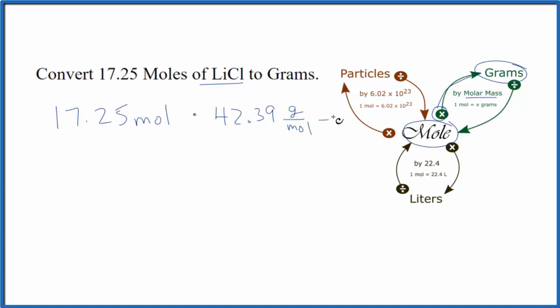Now we'll just multiply these two numbers together. When we do that, the moles are going to cancel out. We're going to be left with grams. So we'll end up with 731.21 grams of lithium chloride.